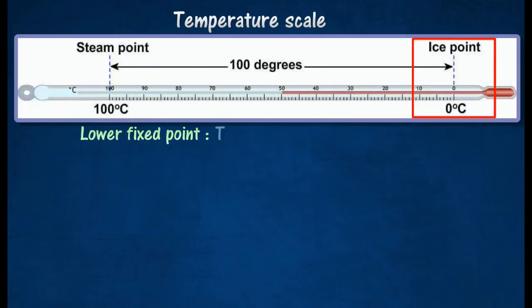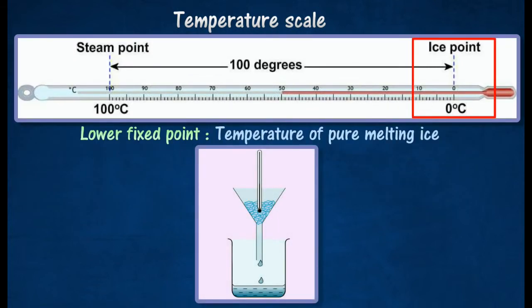The lower fixed point is taken as 0 degree Celsius and it is the temperature of pure melting ice.